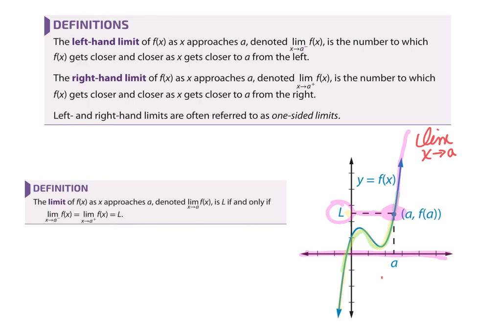I want to know what the roller coaster is approaching at that y value. In order to have an overall limit, both sides have to approach the same thing. If two trains are going different directions approaching two different things, we do not have an overall limit. From the left you could approach 2 and from the right approach 3 — you can have a left-hand limit and a right-hand limit, but if they're not the same, your overall limit does not exist.